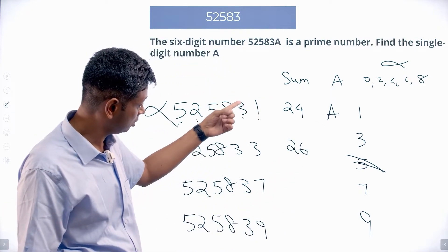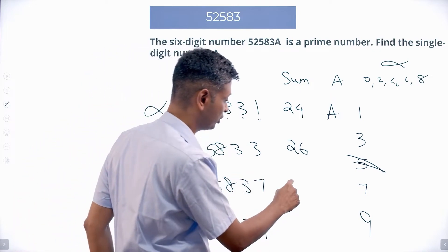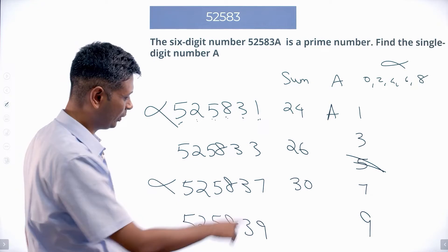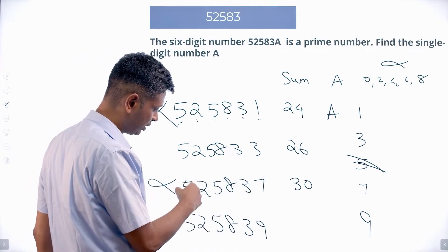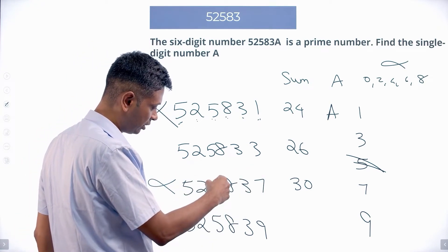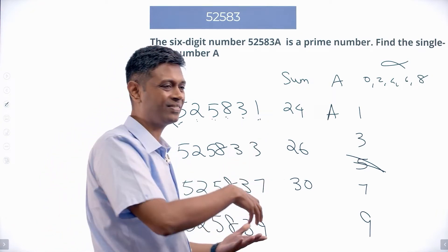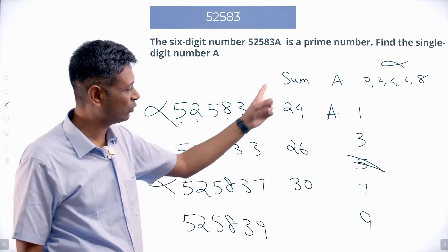24 plus 6, the sum of the digits will be 30. This is not prime. How do I get 30? I can add everything up: 5 plus 2 is 7, 7 plus 5 is 12, 12 plus 8 is 20, 20 plus 3 is 23, 23 plus 7 is 30. Instead of 1, I put 7, I've added 6. 24 plus 6 is 30.